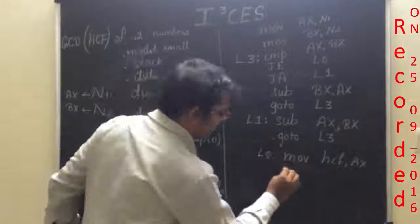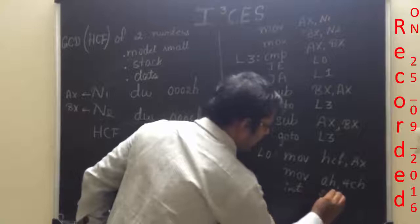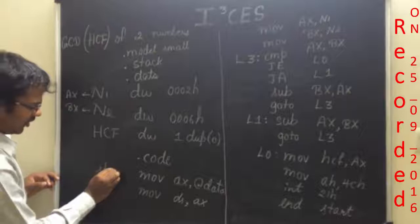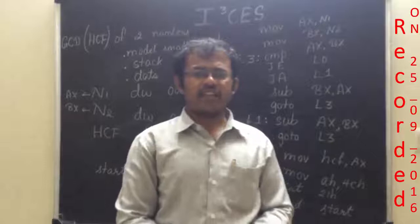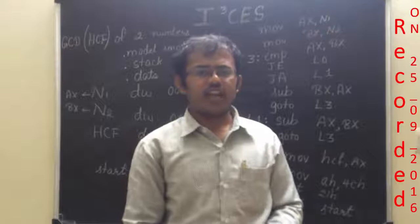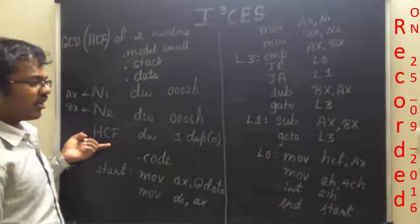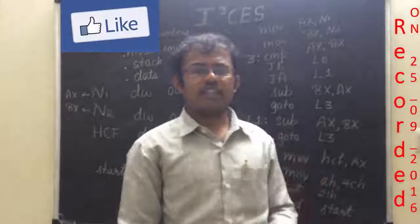This is the program. In order to terminate the program, you write move AH comma 4CH, and one more instruction: INT 21H. And you write END start, where start is a label you write at the beginning of your code. Note that the microprocessor is case-insensitive, so you can write either capital or small letters — HCF written in capitals or small letters makes no difference. Thank you for listening to my lecture on HCF of two numbers. In the next lecture, let us discuss how to write a program for HCF of three numbers. Thank you.